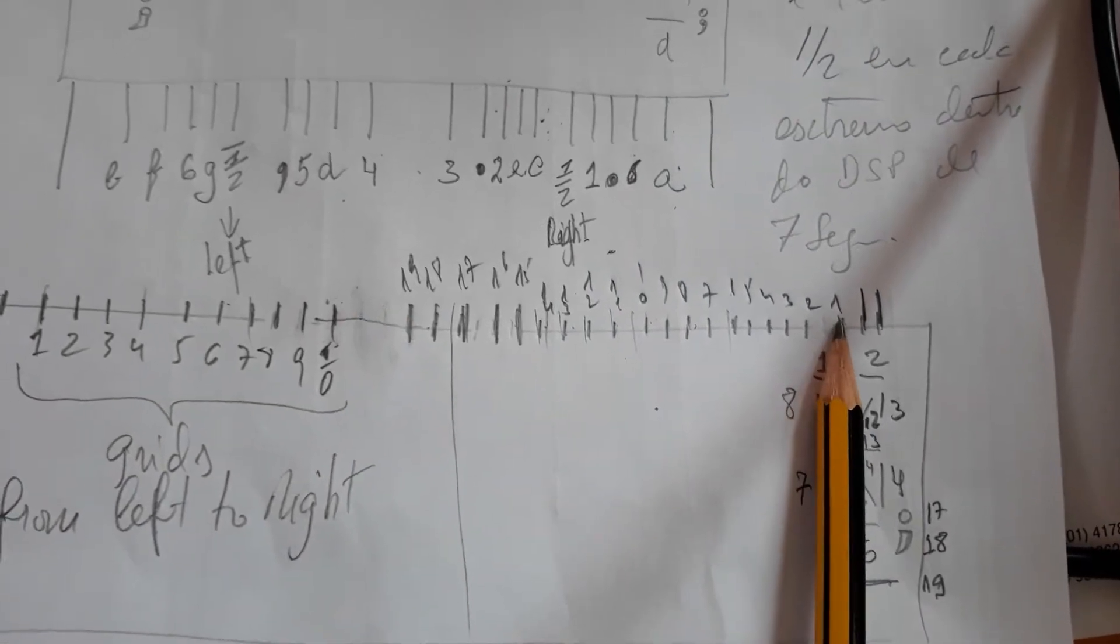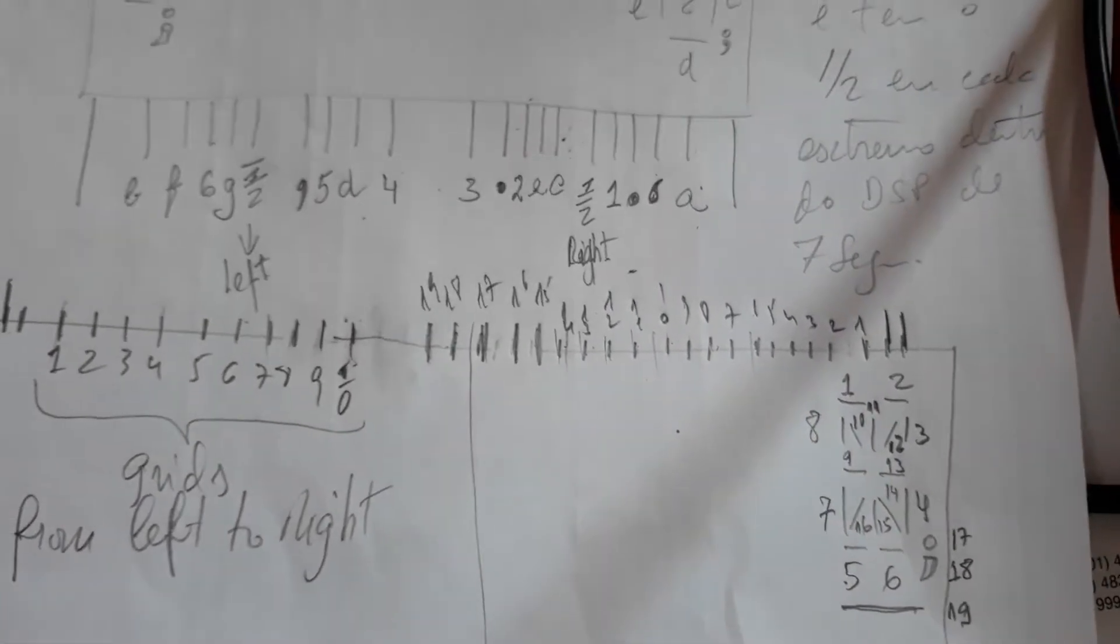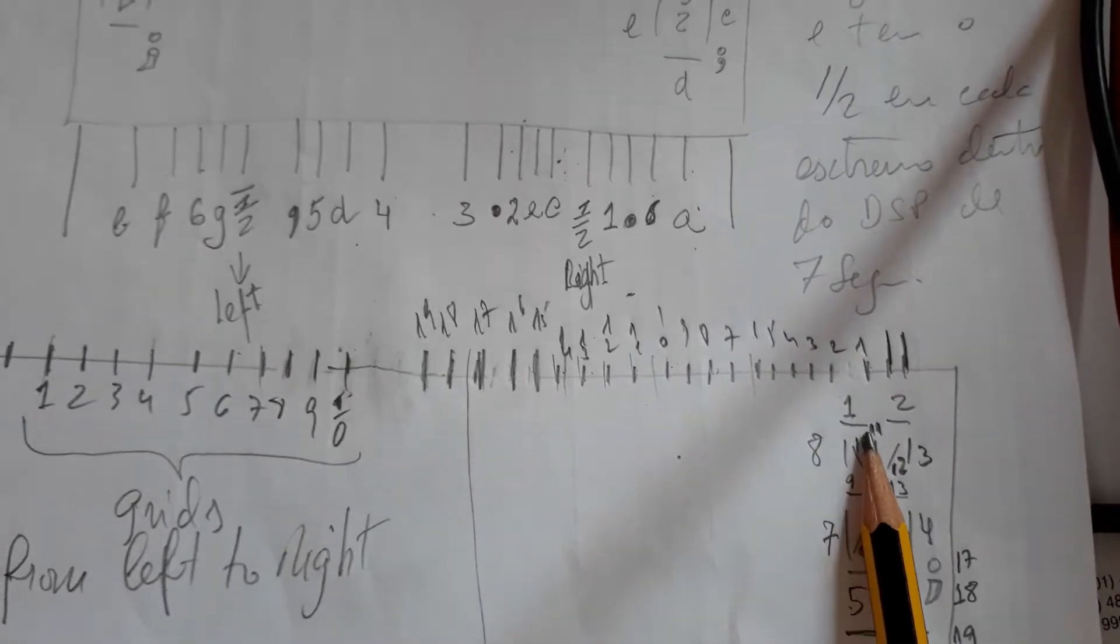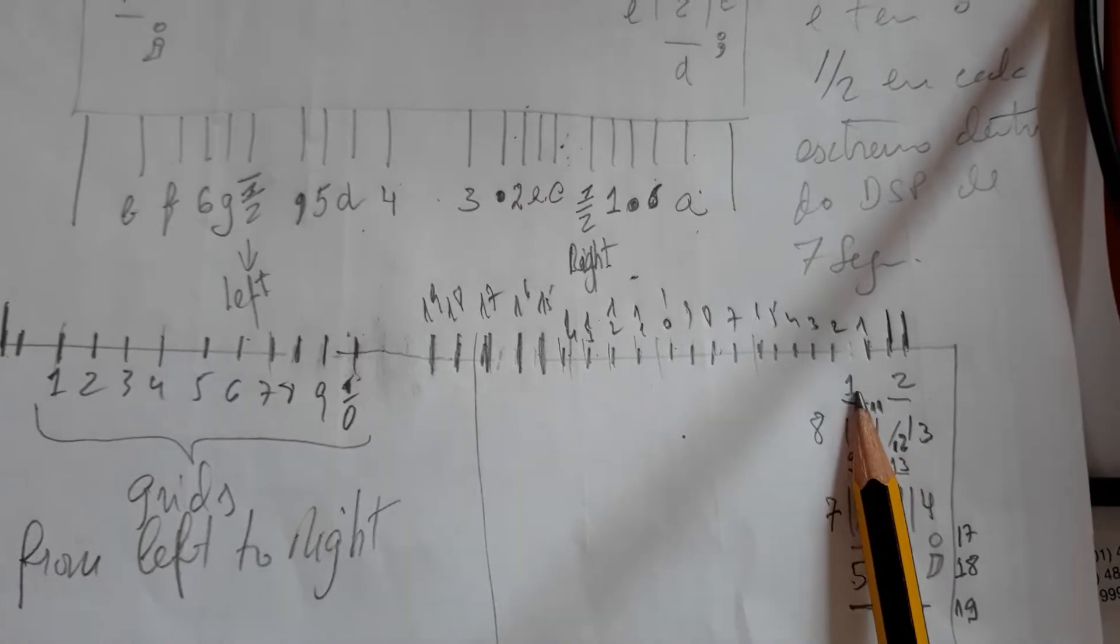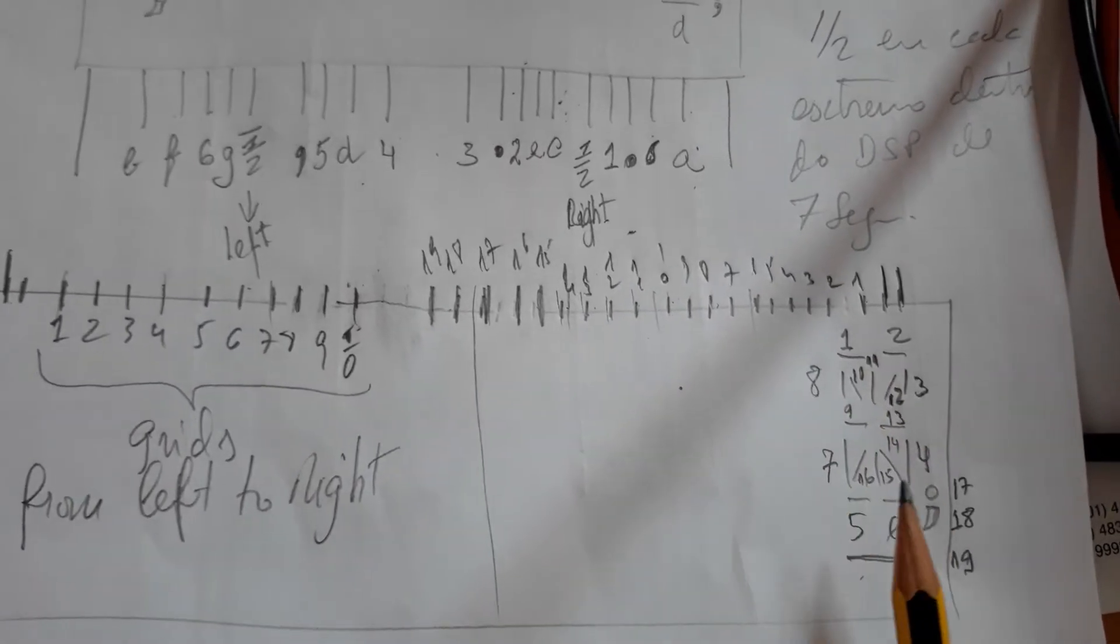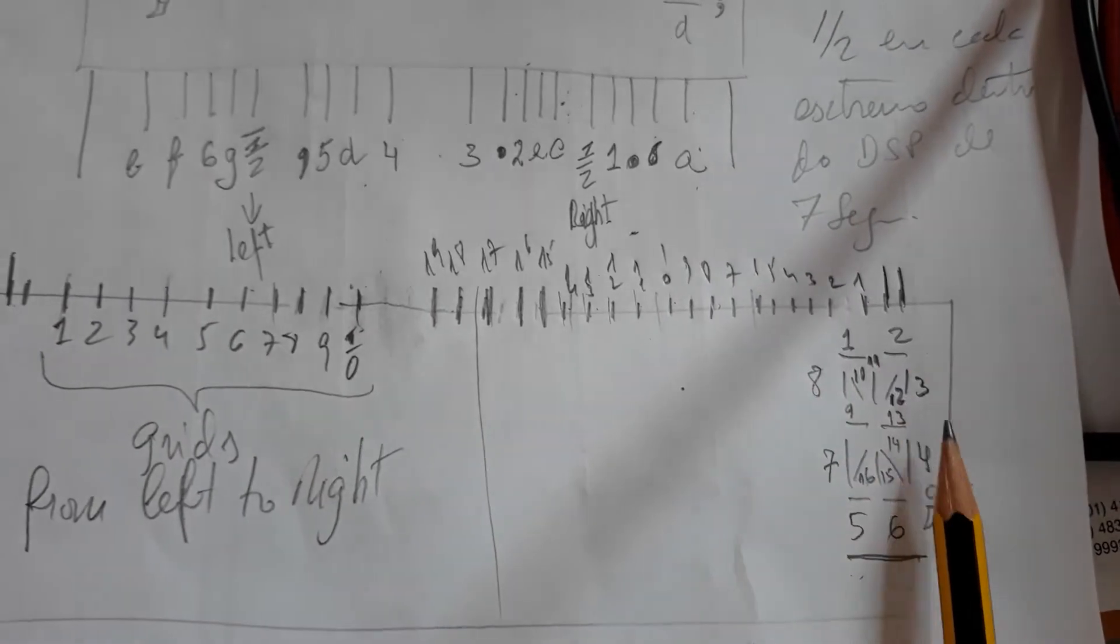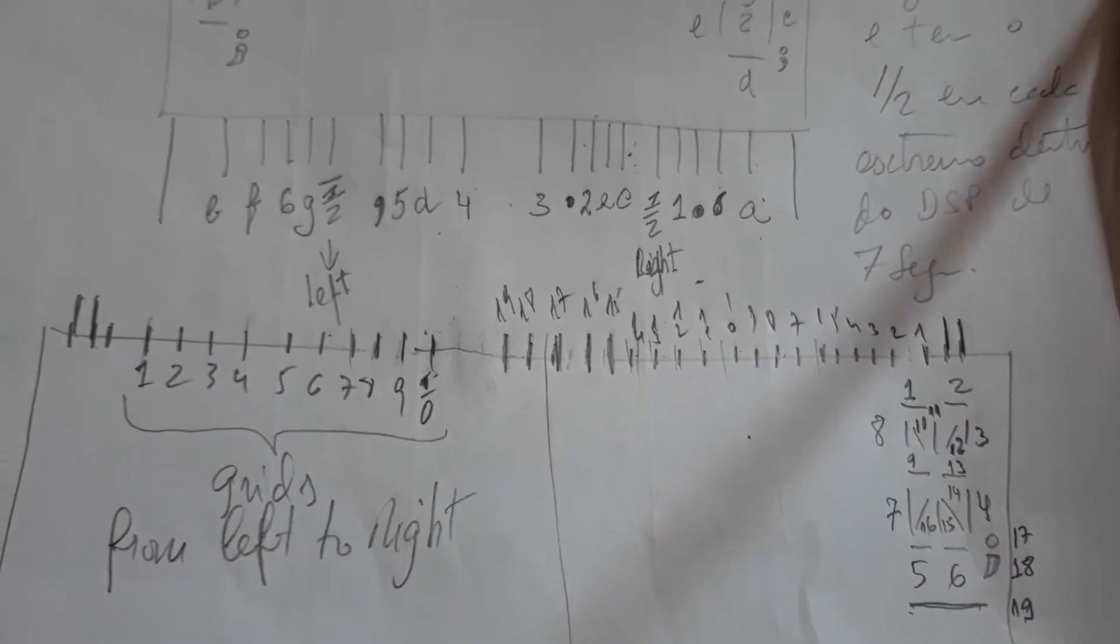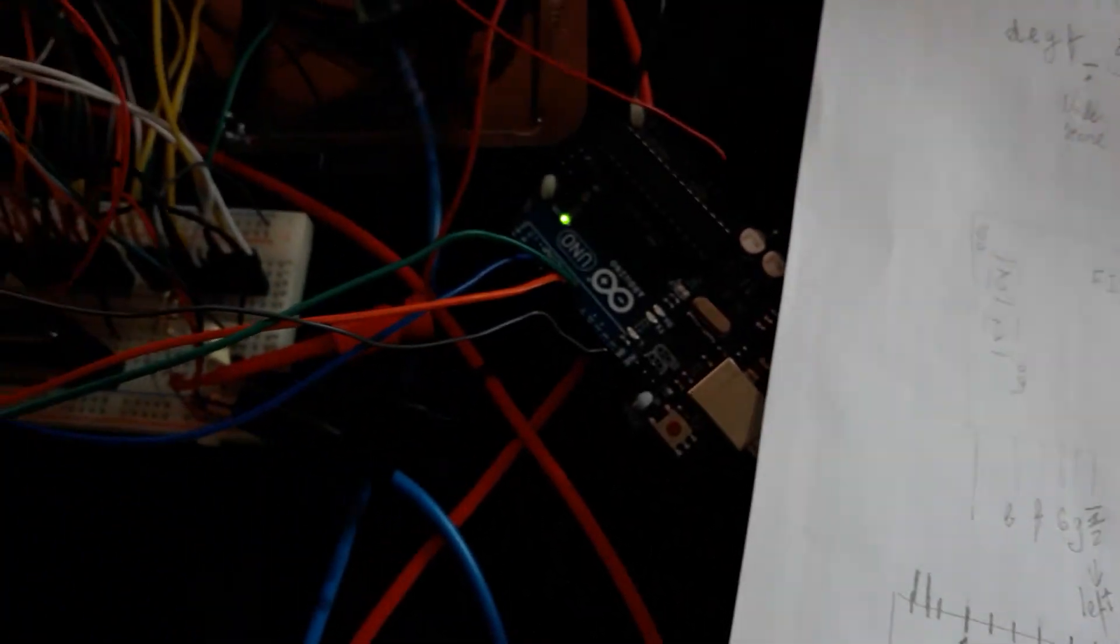This starts from the right to the left. Here are the segments starting from right to left. Here you can see the segment addresses of your display.